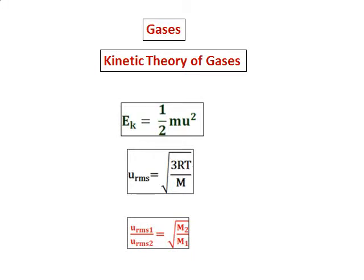We are starting the chapter of gases, and the first topic is kinetic theory of gases. The key formulas for this video are: average kinetic energy EK equals half mu squared, where m is mass and u is speed; root mean square velocity u equals square root of 3RT over M, where M is molar mass; and the ratio of RMS velocities is inversely proportional to molar mass.